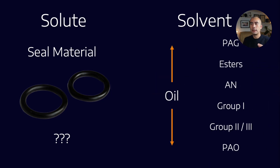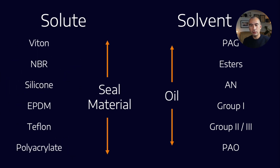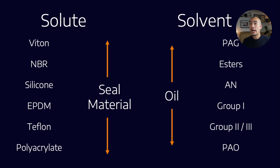PAGs, for example, form hydrogen bonds. Esters generally form some hydrogen bonds, but not as many as PAGs, and as you go down the list towards PAOs, PAOs only have London dispersion forces because they are just so non-polar. We have the same thing for seal materials — Viton, Teflon, EPDM, silicone, NBR — these are all very different types of materials and their polarity varies greatly. There are some very complex chemistries that go into making seal materials, and therefore the bonds they form are just as variable as the base oils.